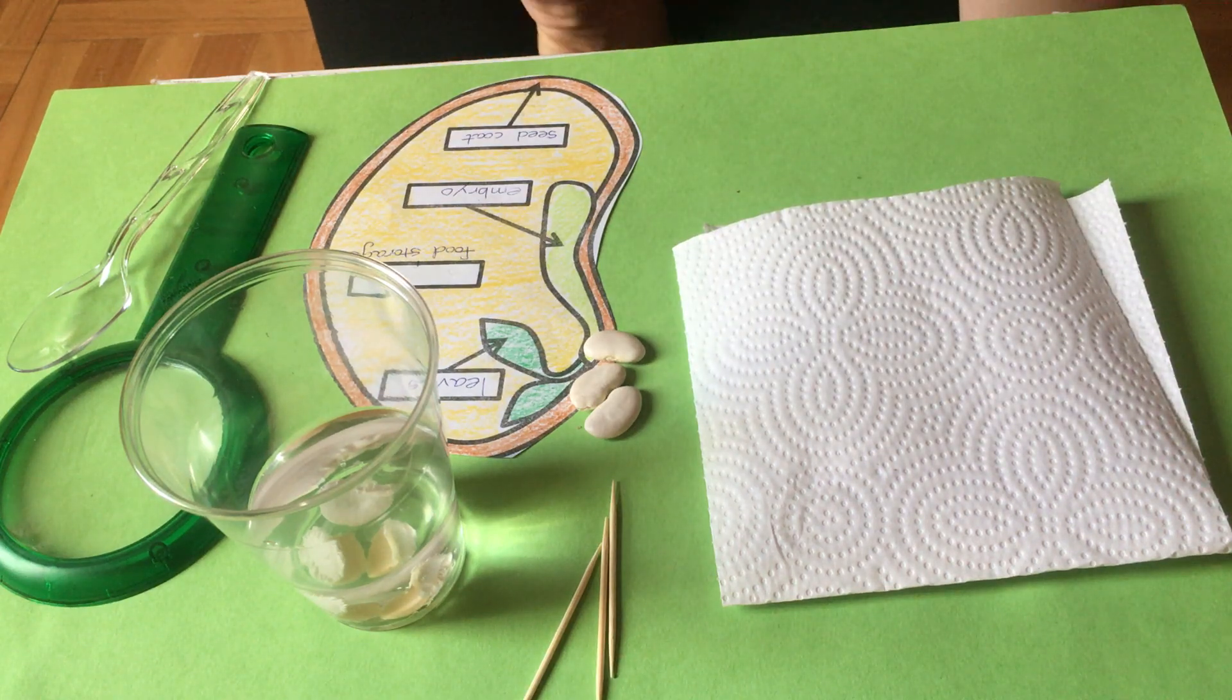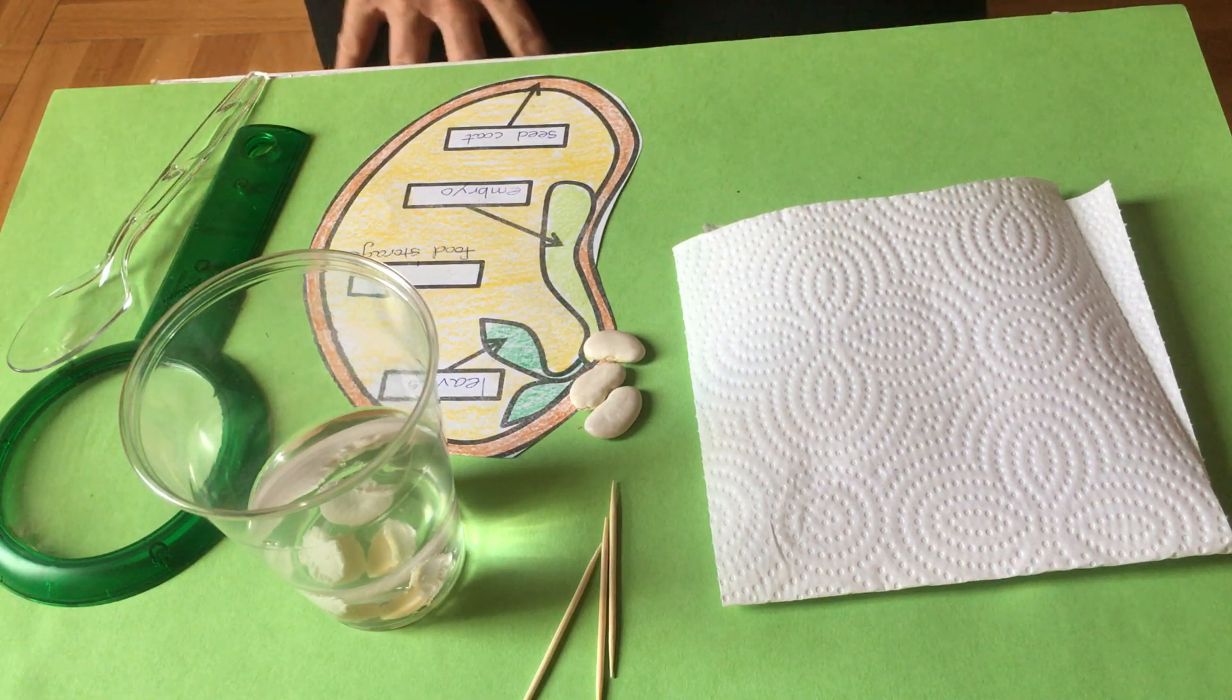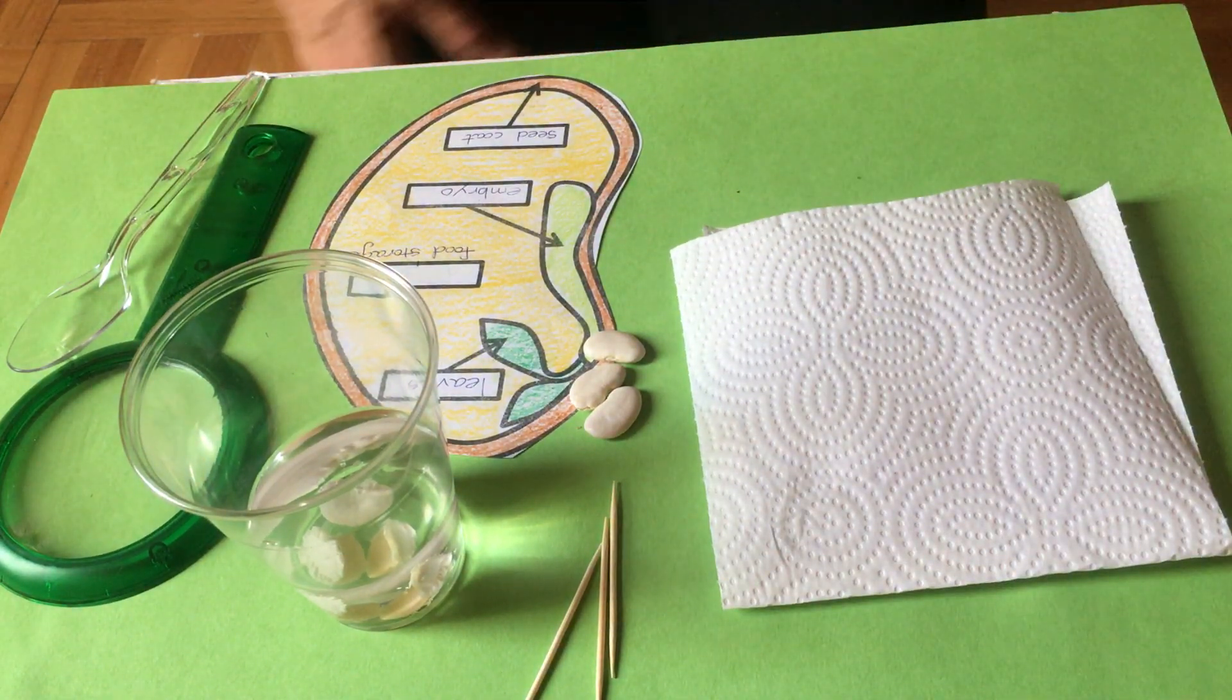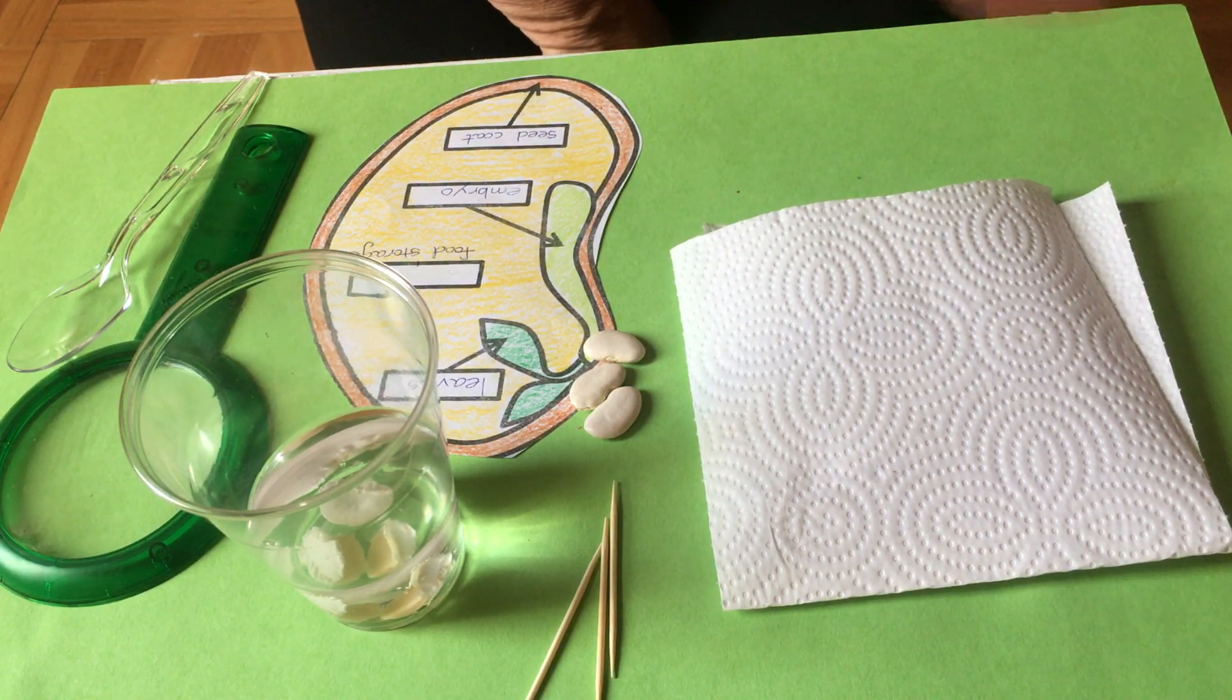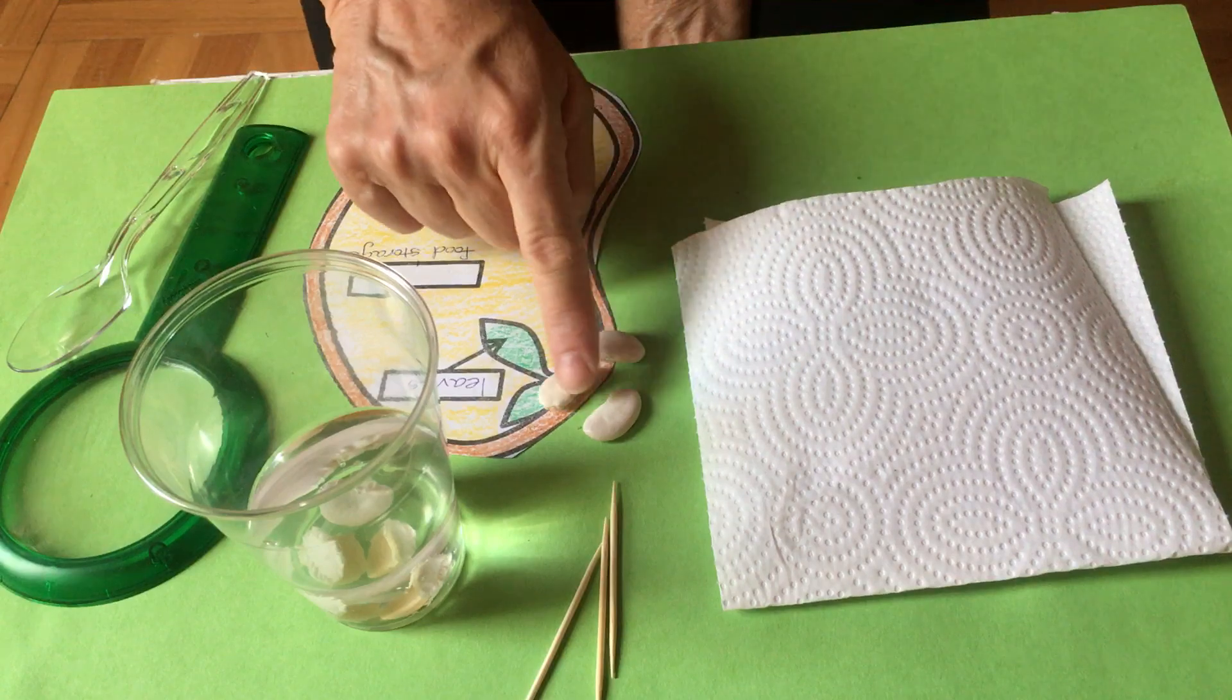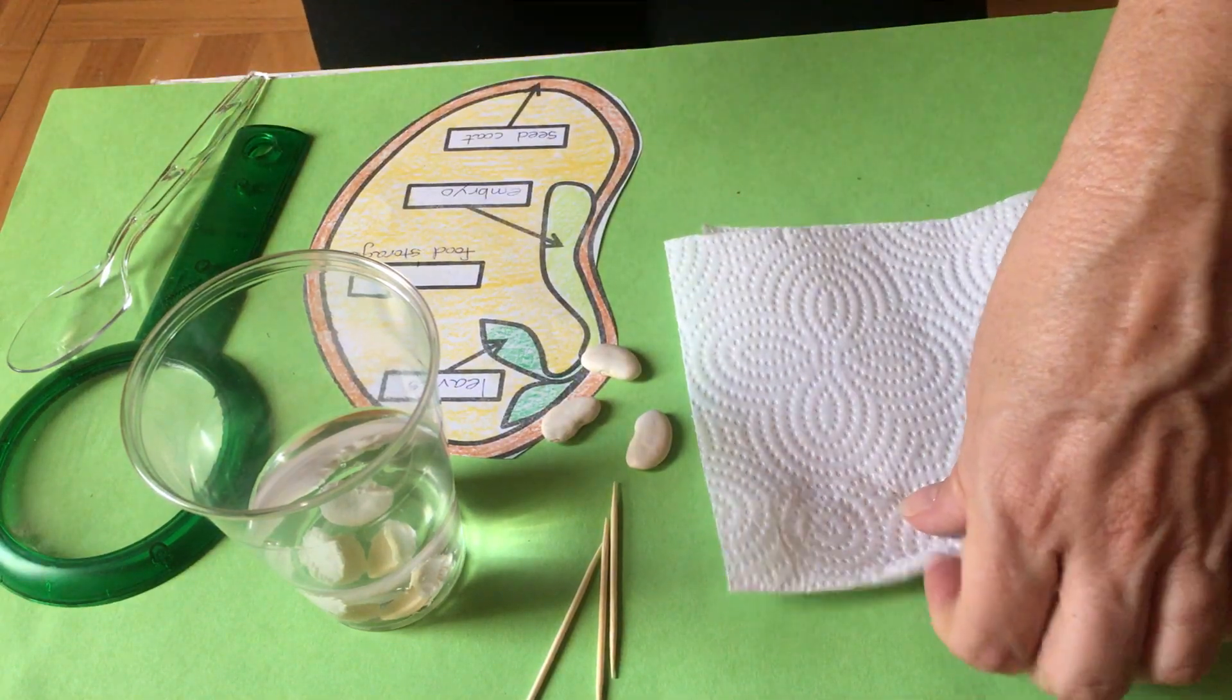Hi boys and girls, today our first experiment for day one is lima bean seed dissection. We're going to look at what is on the inside of a seed. Everyone knows that's how a plant grows - all plants grow from seeds. These are lima bean seeds and there are all different types of seeds out there for different types of plants.